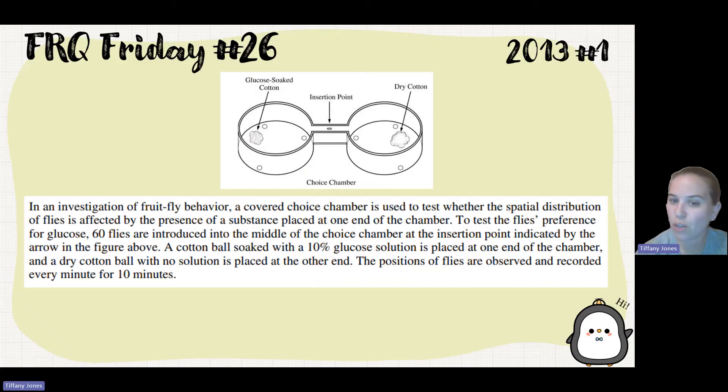In an investigation of fruit fly behavior, a covered choice chamber is used to test whether the spatial distribution of flies is affected by the presence of a substance placed at one end of the chamber. To test flies' preference for glucose, 60 flies are introduced to the middle of the choice chamber at the insertion point indicated by the arrow in the figure above.